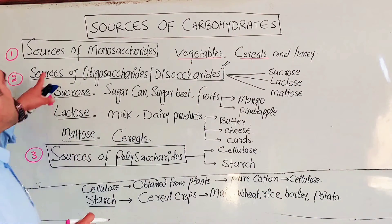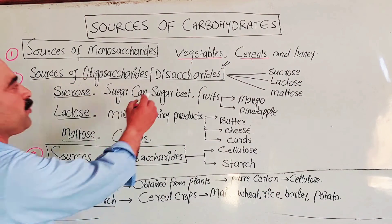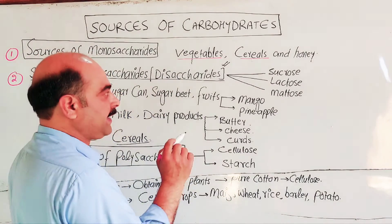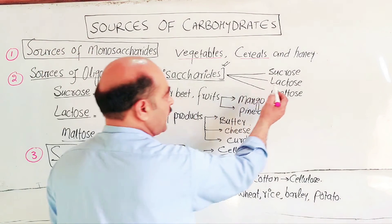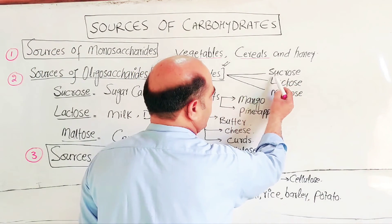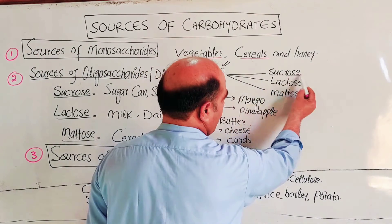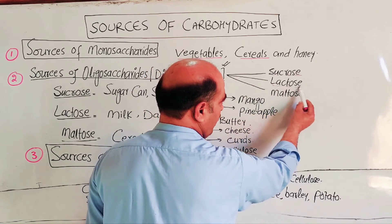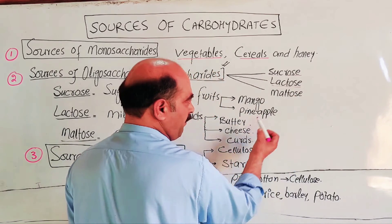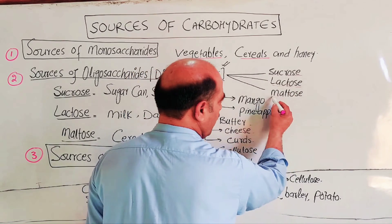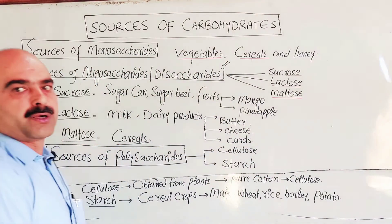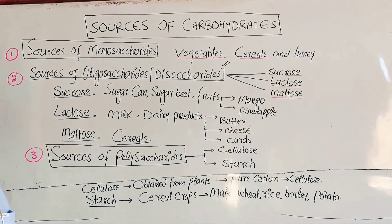To summarize the disaccharides: the main sources are sugar (sucrose), lactose which is milk sugar, and maltose which is malt sugar.